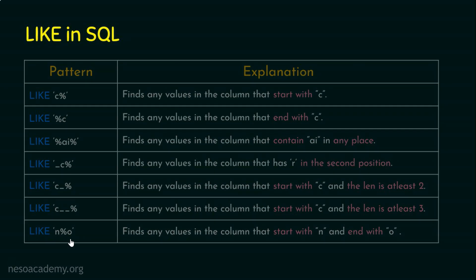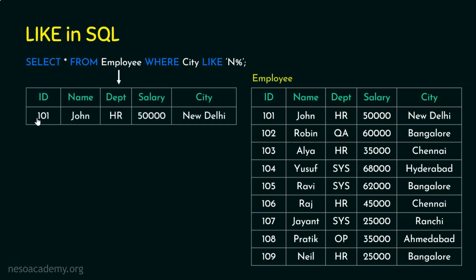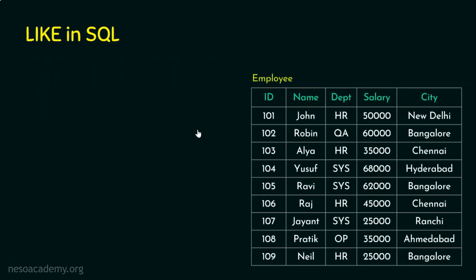Example 1: SELECT * FROM employee WHERE city LIKE 'n%'. Please pause and think about the answer. The result will be only one row. We are filtering the city column for values starting with 'n'. Only New Delhi starts with 'n' in this list, so that is why we get this result.